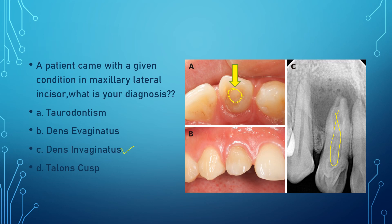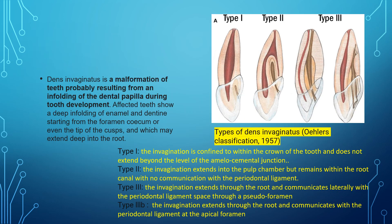Dens evaginatus is an uncommon developmental anomaly characterized by a tubercle on the occlusal surface of mandibular premolars and lingual surface of anterior teeth. Dens invaginatus is a malformation resulting from abnormal infolding of the dental papilla during tooth development. The affected teeth show a deep infolding of enamel and dentine starting from the foramen cecum or tip of the cusps, which may extend deep into the root.